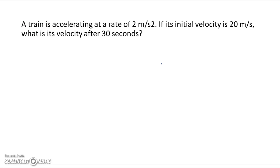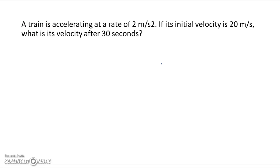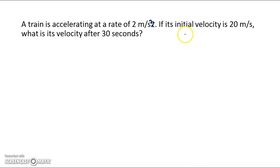Let's try another one. A train is accelerating at a rate of 2 meters per second squared — that should be squared, not a 2. 2 meters per second squared, that's up top. If its initial velocity is 20 meters per second, what is its velocity after 30 seconds?